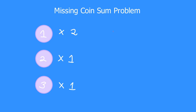Let us see. I can definitely pay one unit using one coin of one unit. I can pay two as well, and three can also be paid. Four can be paid using one coin of three and one coin of one. Five is also possible using one coin of three and one coin of two. Six can be paid using three, two, and one. Seven can be paid using all the coins we have. So the minimum amount that cannot be paid is eight.